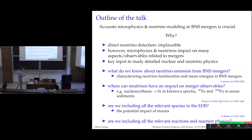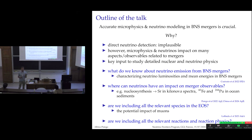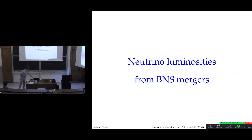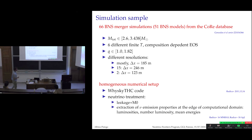In the second part of my talk, I want to show with quantitative results that including neutrinos is important for computing relevant observables. For example, are we at a stage where we can say something about the typical luminosity and mean energy from a set of simulations — not just one or two? Can we measure impact in kilonova spectra or in sediments? And are we sure we are including all relevant species and how does the physics depend on that? Let's start with the first topic: neutrino luminosities.